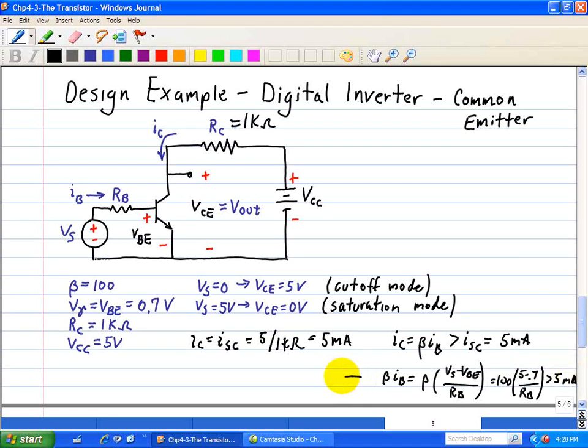Now when we solve for RB, RB will make it an inequality using this relationship as it appears. So it's less than 100 times 5 minus 0.7, which is 4.3 divided by ISC, which is 5 milliamps, so it's voltage over the current, so that makes sense, and that's equal to 86 kilo ohm.